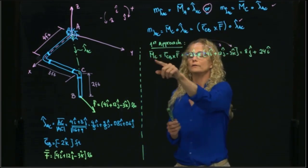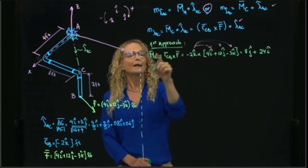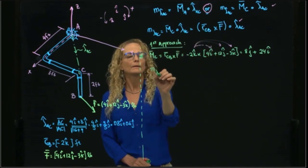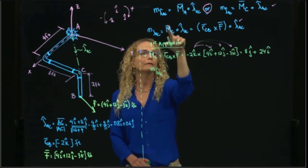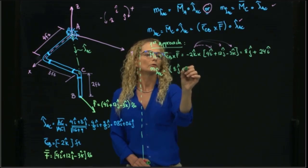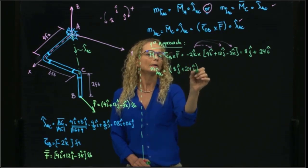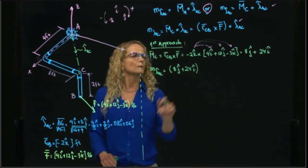And now that I have the value of this moment, I will multiply this vector, which is 8j plus 24i, scalar...